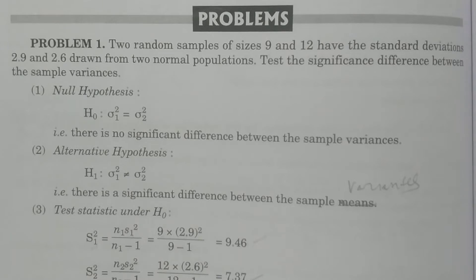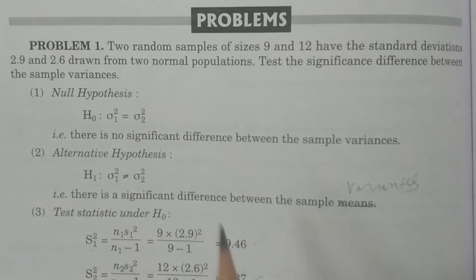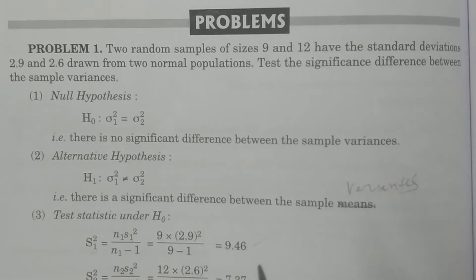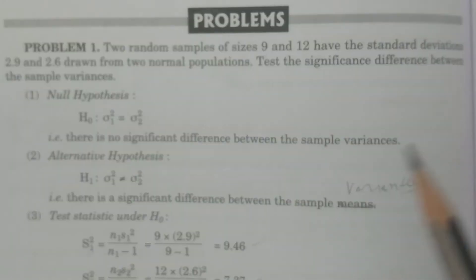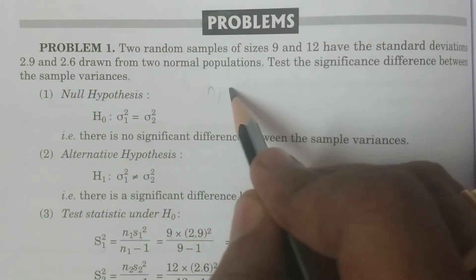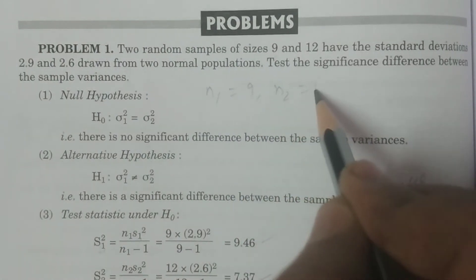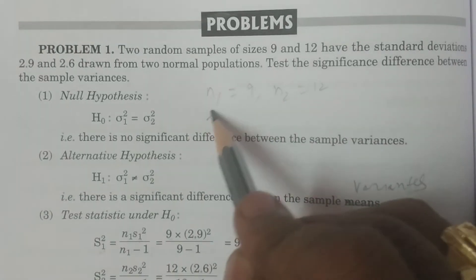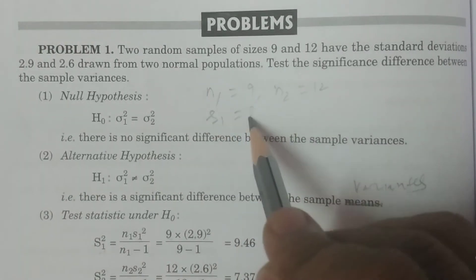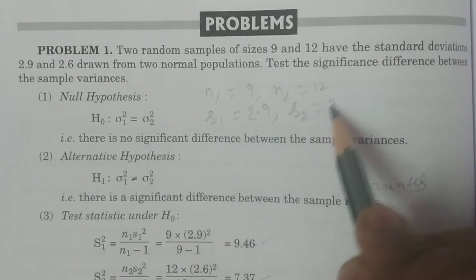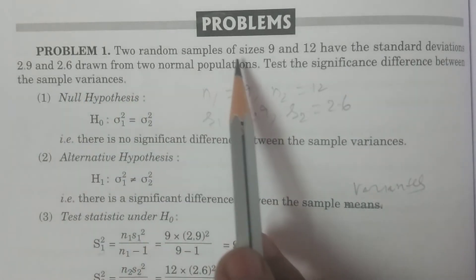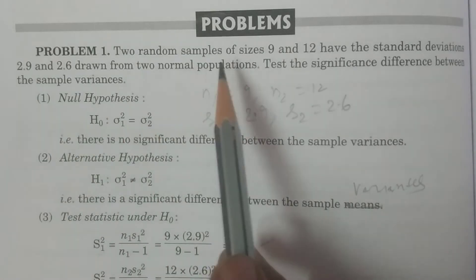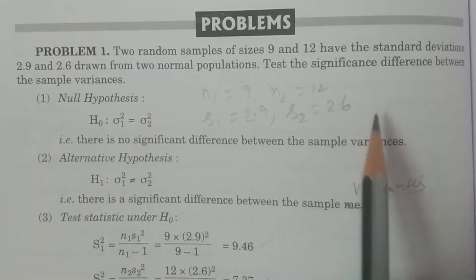This is a small sample, since small sample means sample size less than or equal to 30. Sample sizes are 9 and 12. So N1 is equal to 9, N2 is equal to 12. S1 is equal to 2.9 and S2 is equal to 2.6 — these are the standard deviations, giving us S1 and S2.